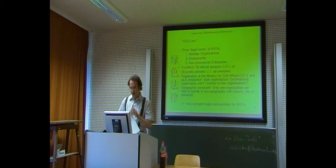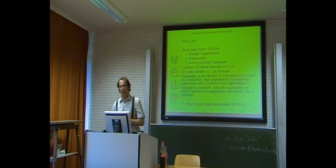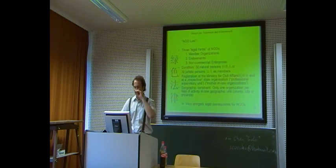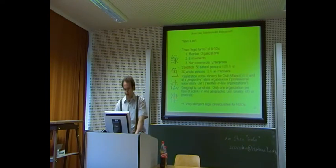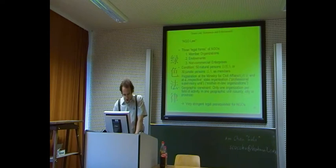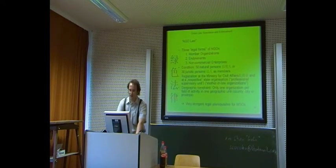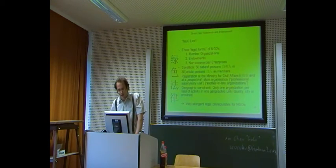Right now I would like to tell you some basics about NGO law. There exist mainly three legal forms of NGOs in China. The first are member organizations, the second are endowments, and the third are non-commercial enterprises. The most important of these three forms are member organizations. With respect to these organizations, a condition exists that at least 50 natural persons and/or 30 juristic persons must be members.